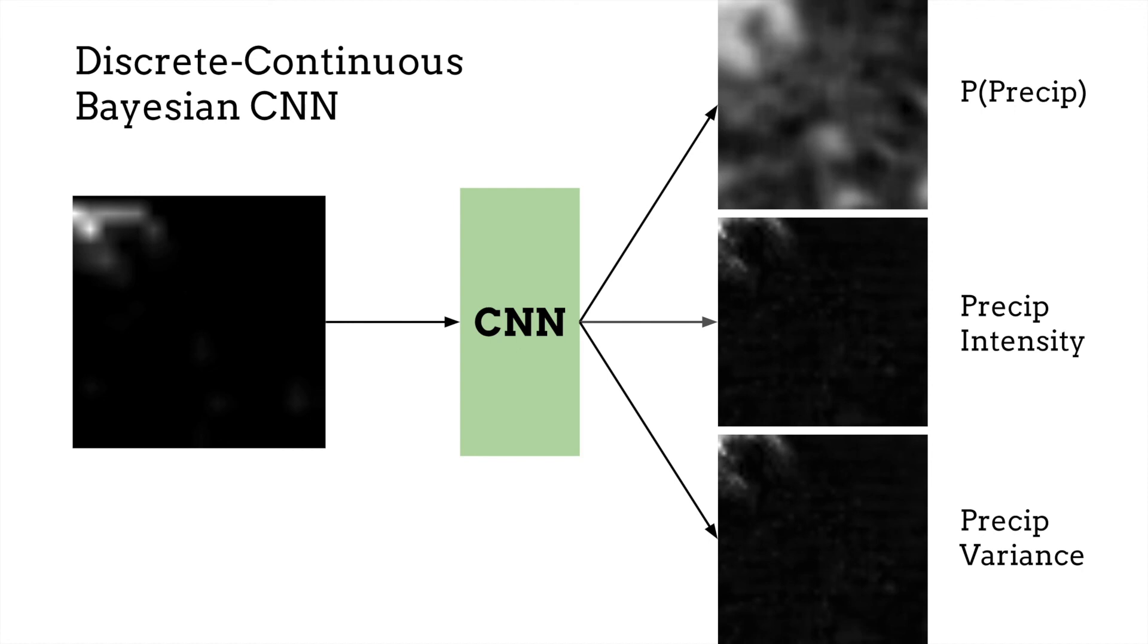We also show that the log-normal distribution can be used in Bayesian neural networks to model skewed data.